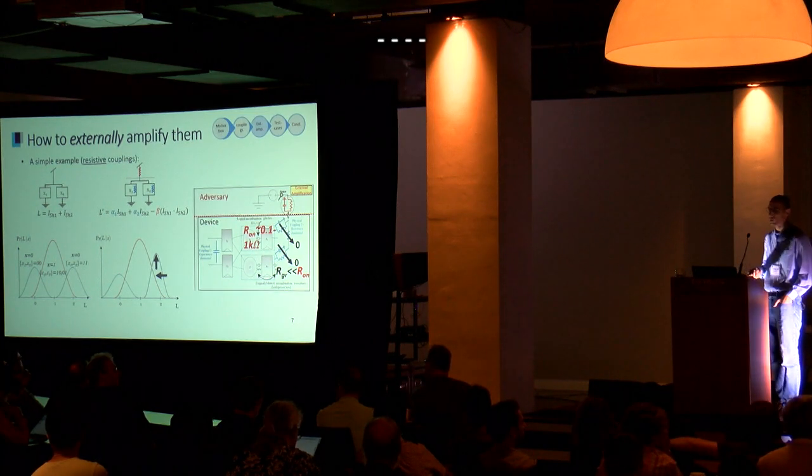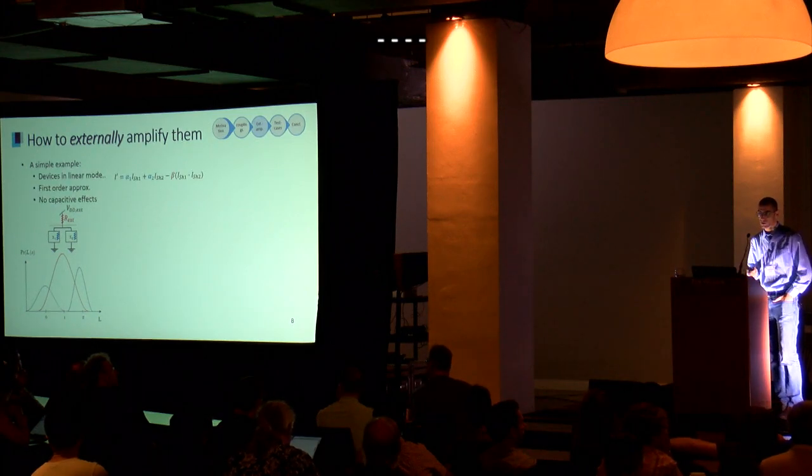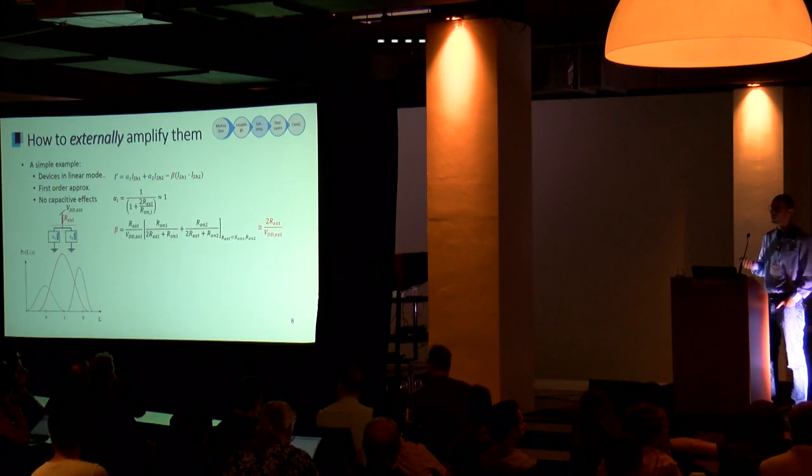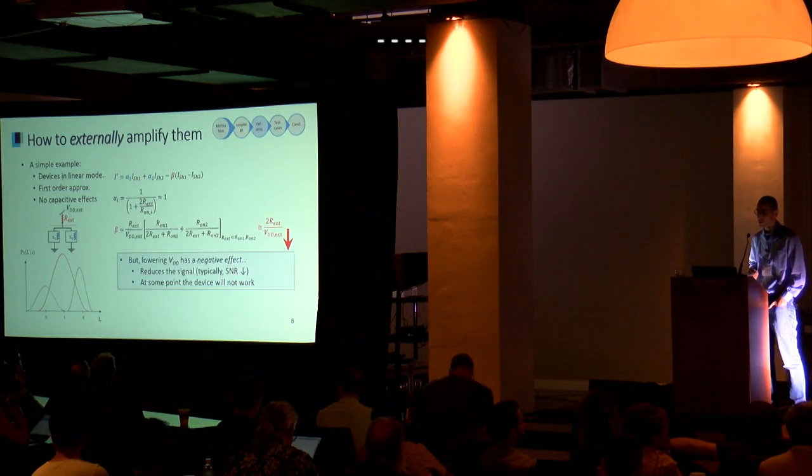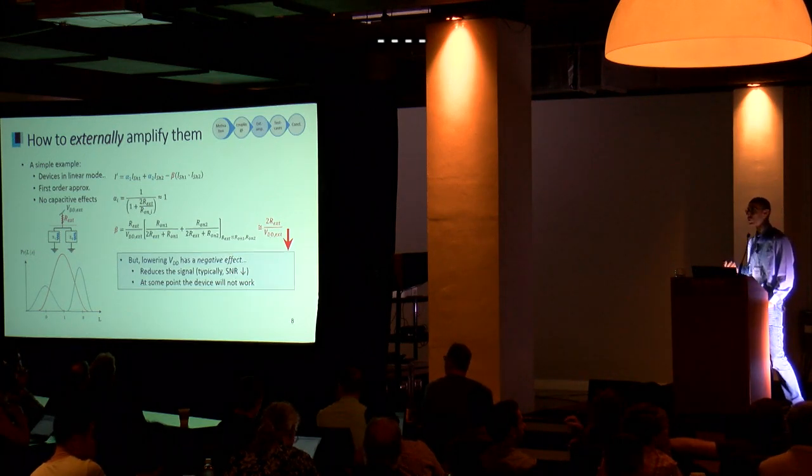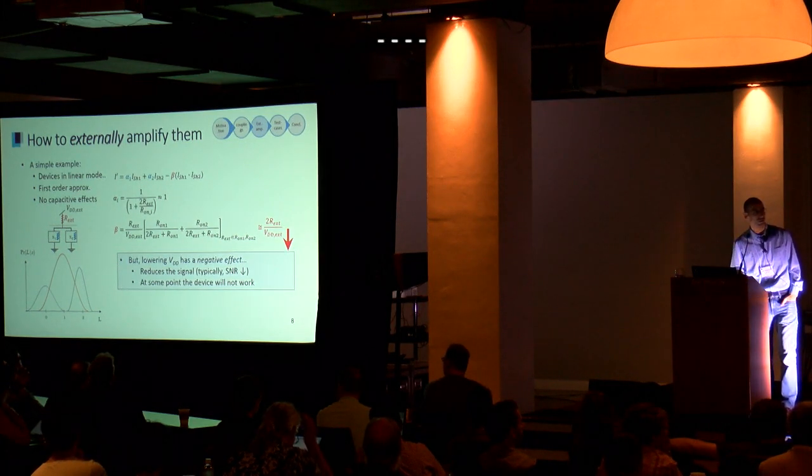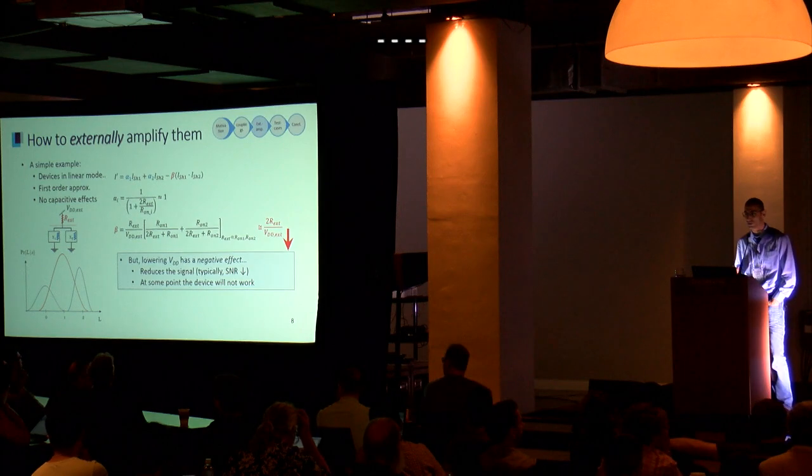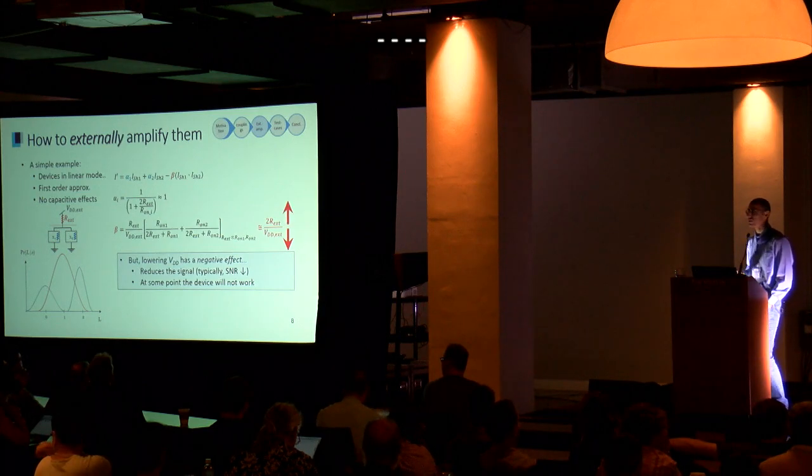We get non-symmetric distributions, which means we have information in lower statistical moments. If we want more amplification, we can reduce the external voltage, but this reduces signal-to-noise ratio and eventually the device won't work. Alternatively, we can increase the external resistance, though at some point the device won't work.